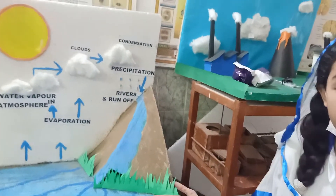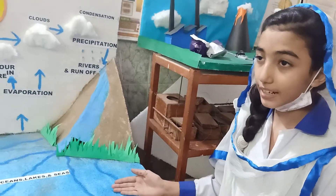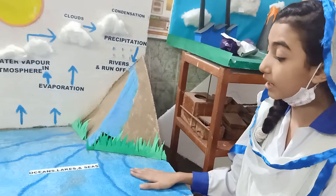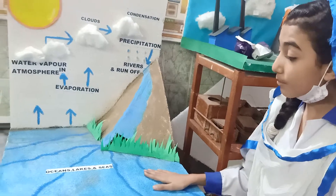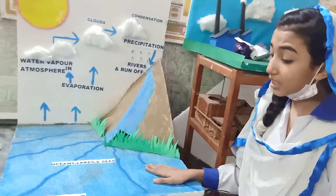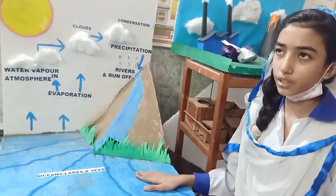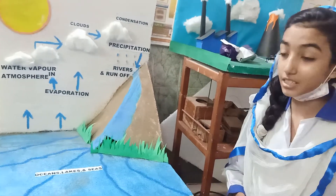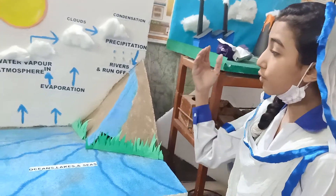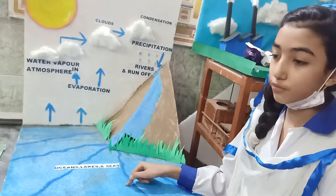The water cycle is an important part of the earth and is necessary for life. Water is so important that we cannot live without it. We use water for cooking, drinking, washing, and more. Nature uses the water cycle to recycle water so that we can obtain fresh water.